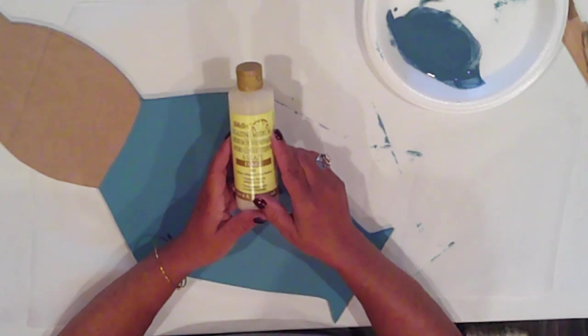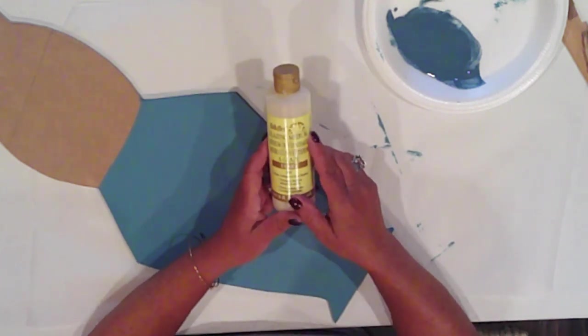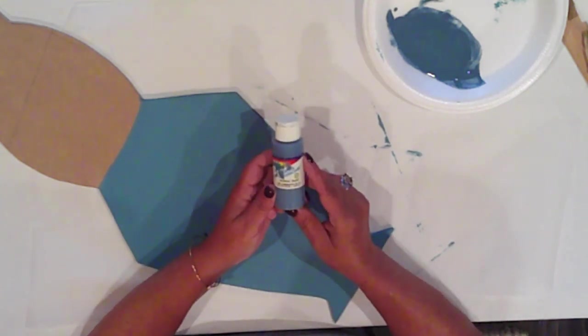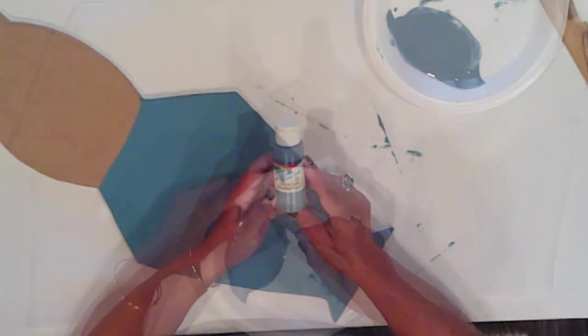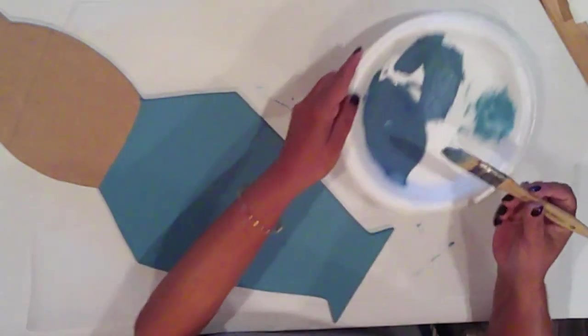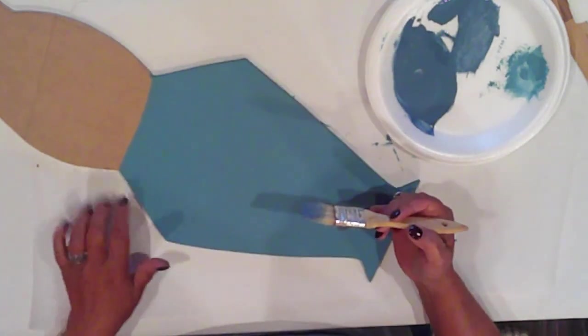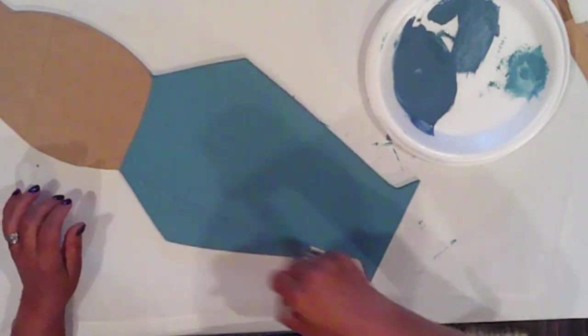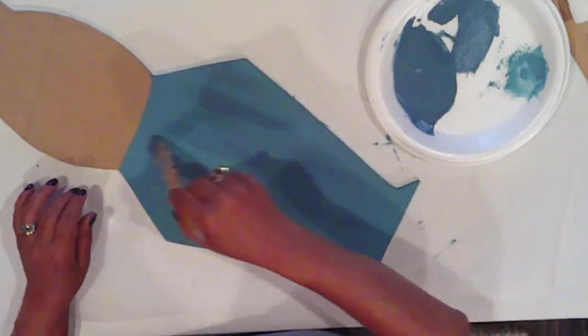Now that his body is dry, I'll mix some Folkart glazing medium and Ceram Coat Williamsburg Blue on my plate, just using my brush to mix it together. I'm using a cheap chip brush to apply the glaze using long light vertical strokes.